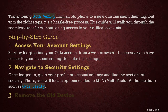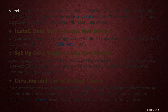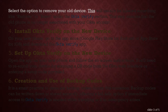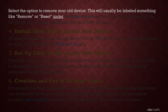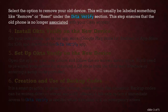Step 3: Remove the old device. Select the option to remove your old device. This will usually be labeled something like 'Remove' or 'Reset' under the Okta Verify section. This step ensures that the old phone is no longer associated with your Okta account.